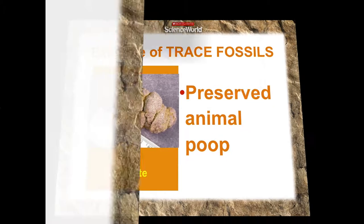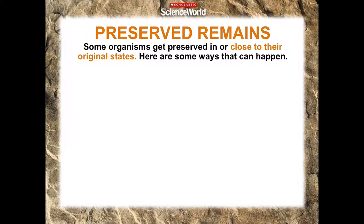The next type of fossil is preserved remains, which equals close to the original state. These are fossils we didn't have to do much to — just get them out of their environment and put them in a museum. Unlike dinosaur fossils where we had to reassemble petrified bones, preserved remains were captured as close to what they already were. We did not have to reconstruct them.